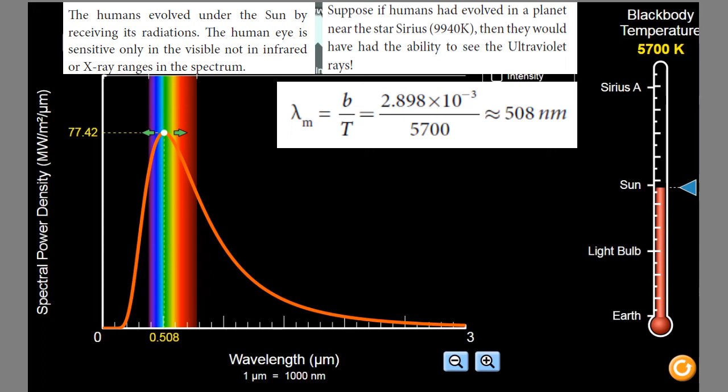Suppose, if humans had evolved in the planet near star Sirius. Sirius is another star. If we had evolved in some other planet near star Sirius, however I will be? That is the question here. Now, I am going to change the temperature. I am going to move this arrowhead from sun to Sirius star. If we are very closer to the Sirius star, what will happen to our eye? Whether the visible region is visible or some other radiations are visible, that could be tested now.